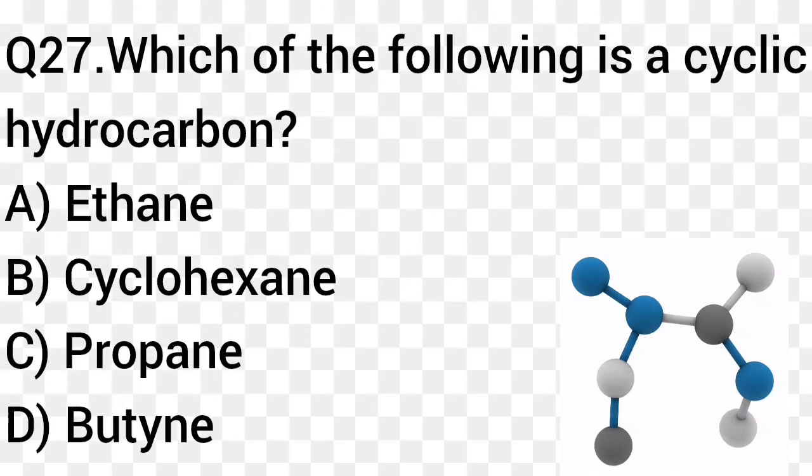Question number 27. Which of the following is a cyclic hydrocarbon? Option A: Ethane. Option B: Cyclohexane. Option C: Propane. Option D: Butane. The right answer is option B, Cyclohexane.